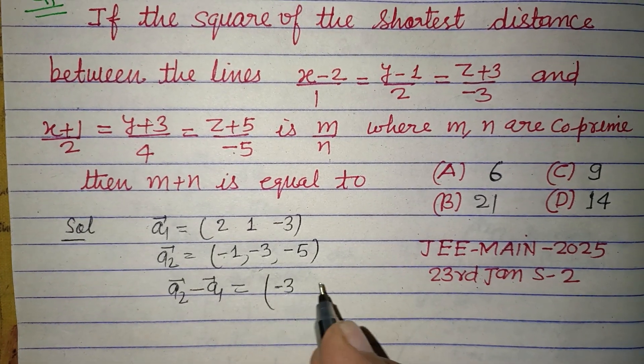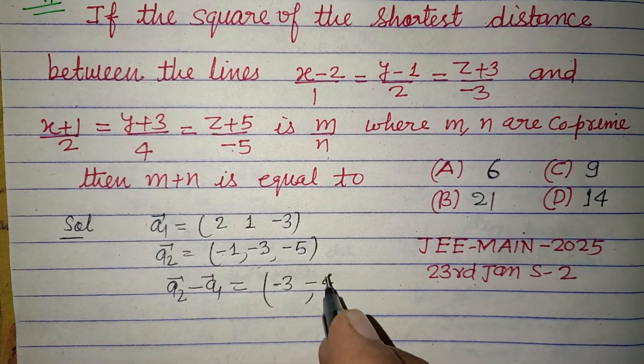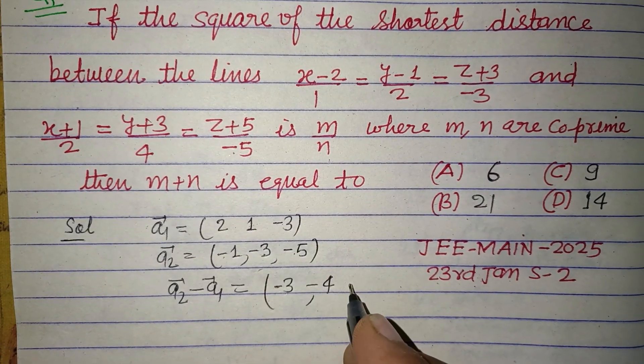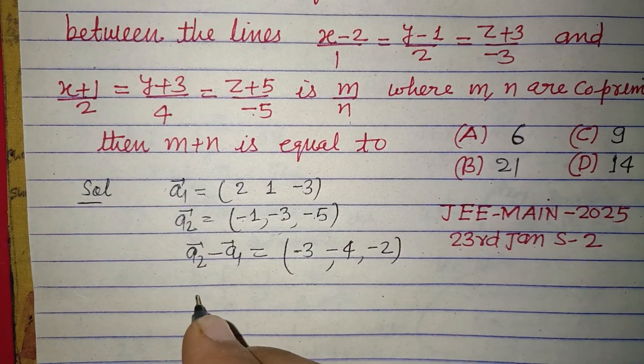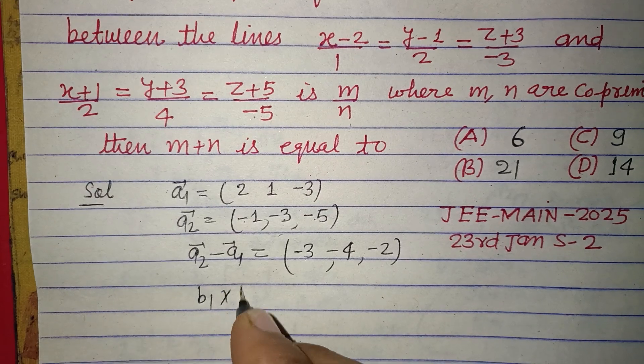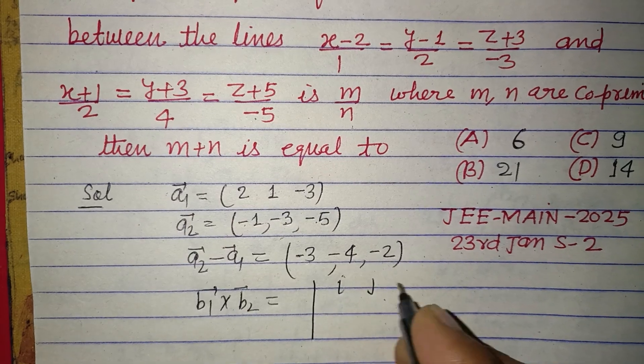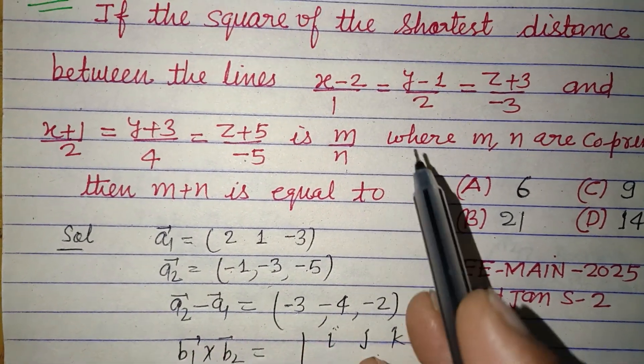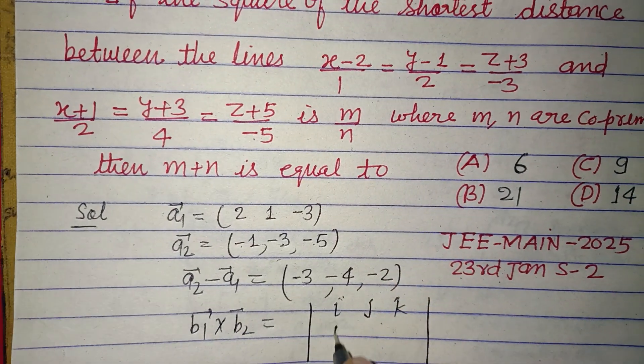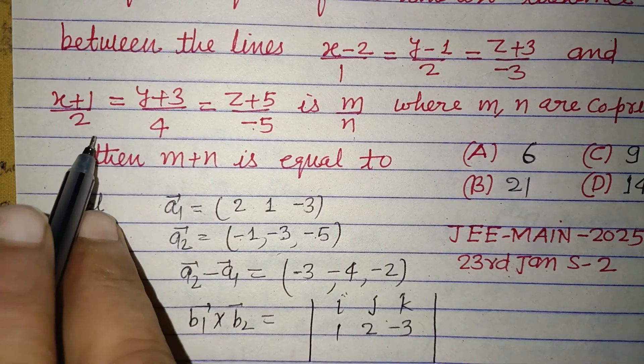Now b1 cross b2. b1 cross b2 equals i, j, k determinant: 1, 2, -3 in the first row and 2, 4, -5 in the second row.